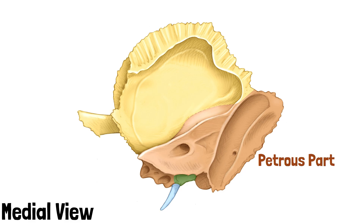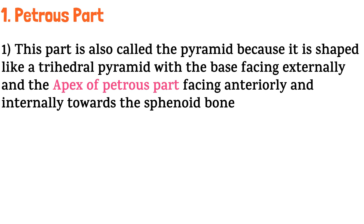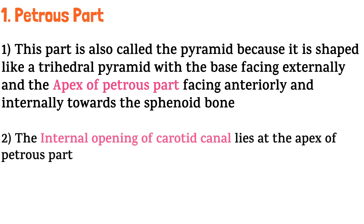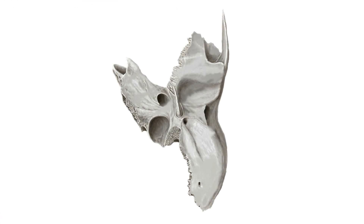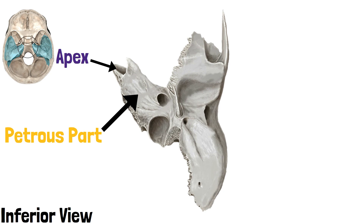We will discuss each of these parts separately. Let's start with the petrous part first because it has most of the features. This part is also called the pyramid because it is shaped like a trihedral pyramid, with the base facing externally and the apex facing anteriorly and internally towards the sphenoid bone. The internal opening of the carotid canal lies at the apex of the petrous part. This is the inferior view of the bone — this is the apex of the petrous part, and this opening is the opening of the carotid canal.